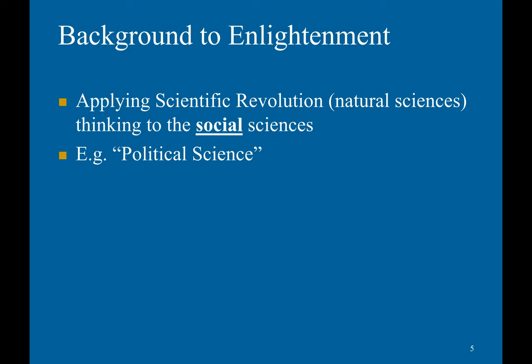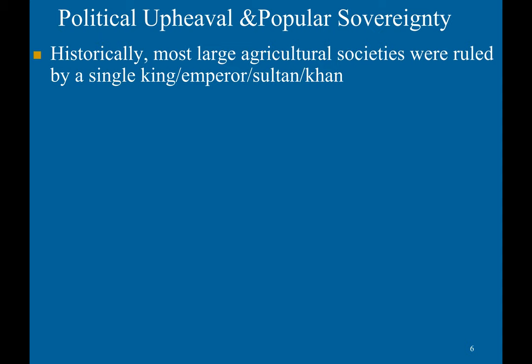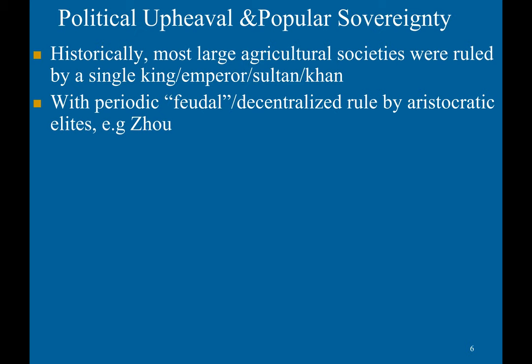The Enlightenment was basically focused on applying the scientific revolution and natural sciences to thinking about political and social sciences. Historically, most large agricultural societies were ruled by a single king, emperor, sultan, or similar ruler, with periodic feudal or decentralized rule by aristocratic elites — for example, the Zhou dynasty.